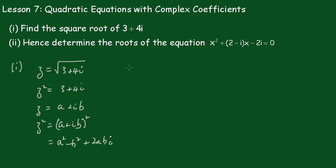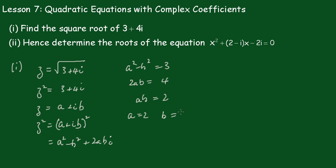Therefore the real part, a squared minus b squared, must equal 3, and 2ab must equal 4. This becomes ab equals 2. From inspection we can see that a equals 2 and b equals 1.